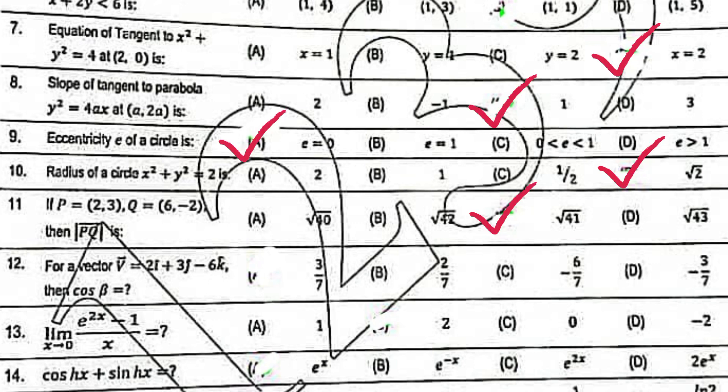For a vector v equal to 2i plus 3j minus 6k, then cos beta equal to 3 over 7. Limit x approach to 0, e to the power 2x minus 1 divided by x equal to 2.